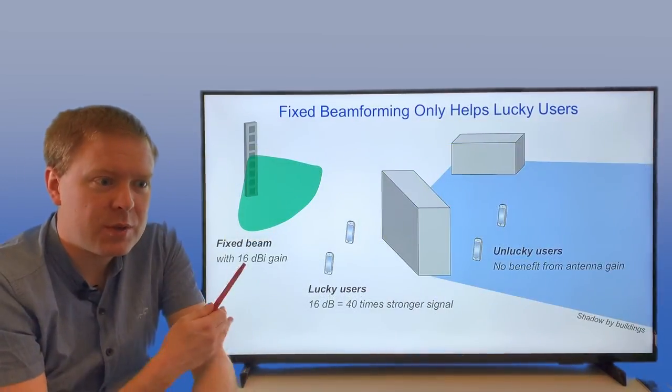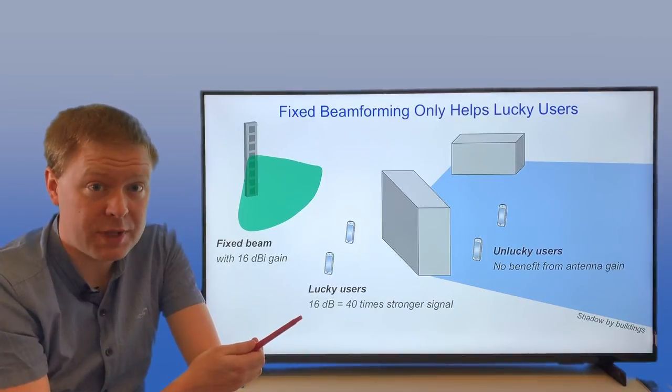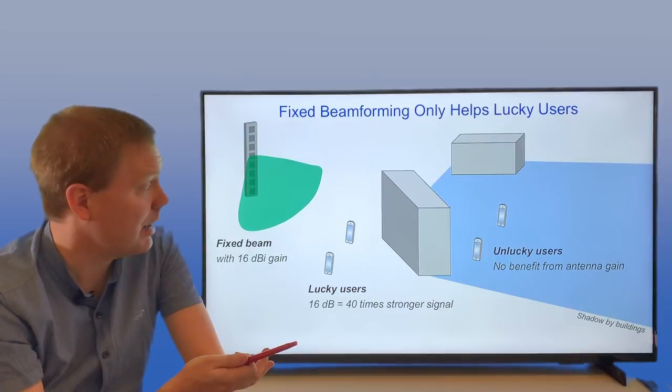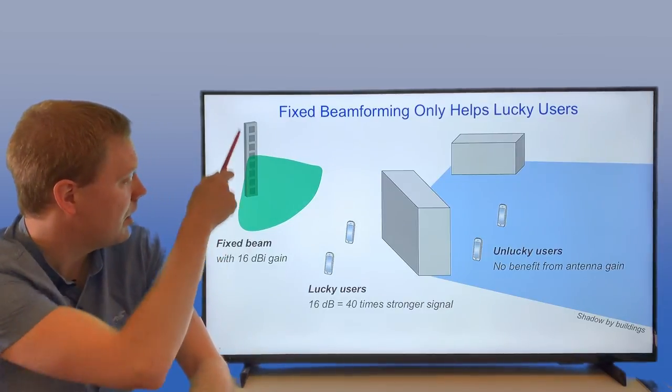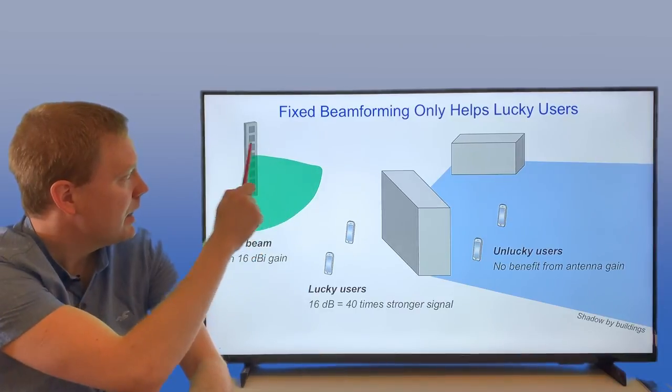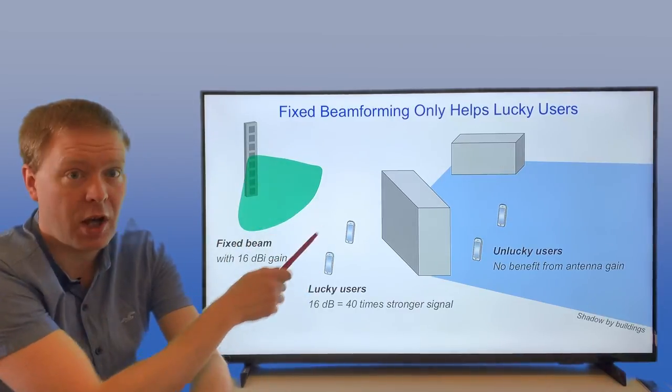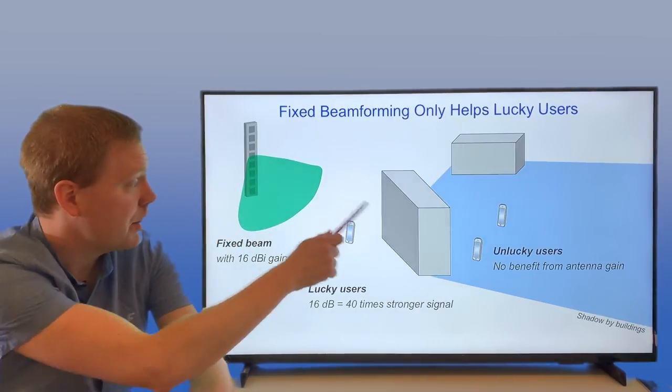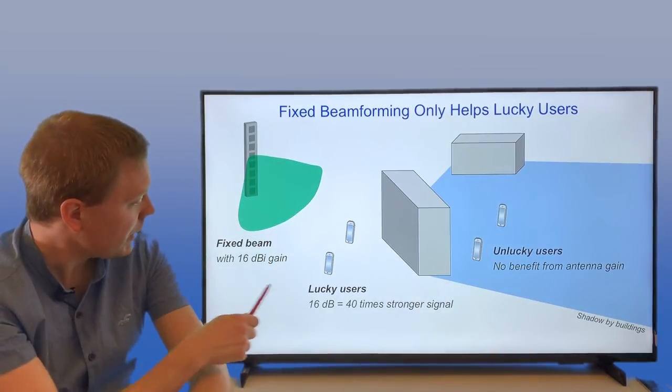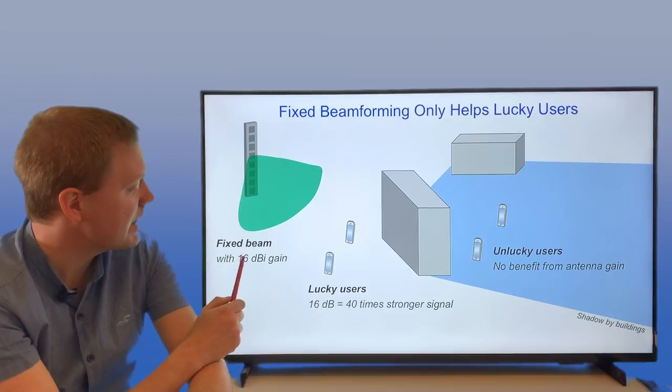The idea of using this type of beamforming to focus energy in different directions has been used in cellular communications for a long time. Here is a classical array where we're sending out a fixed beam that's focusing towards where the users are, below the base station and down to the ground and up in the air. This one is providing so-called 16 dBi gain.